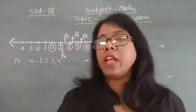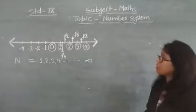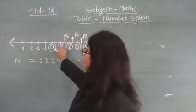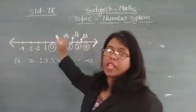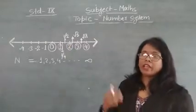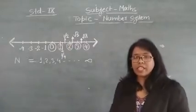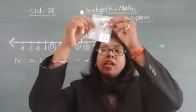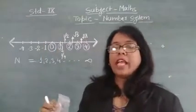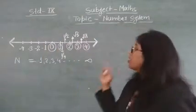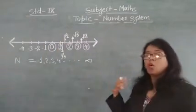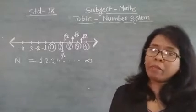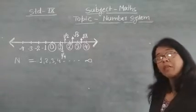Now it is William's turn. William goes and he picks 0 — he picks only 0. Then the host tells that all the whole numbers on the number line have been picked.